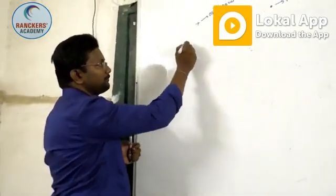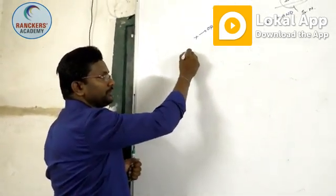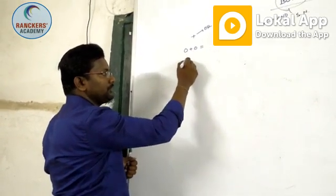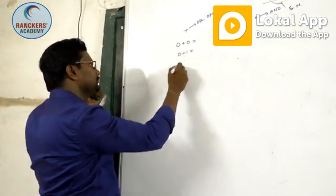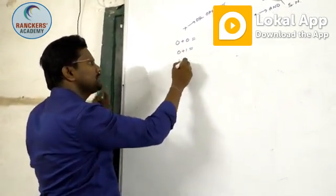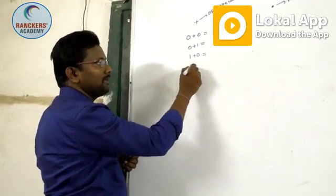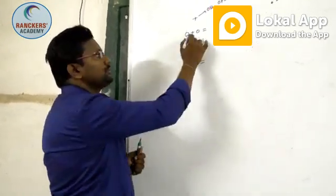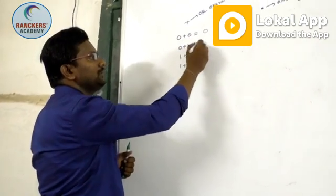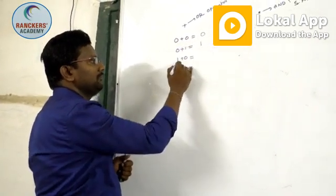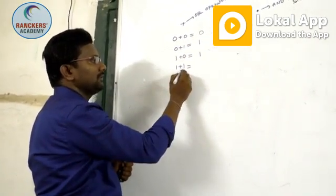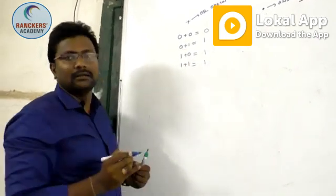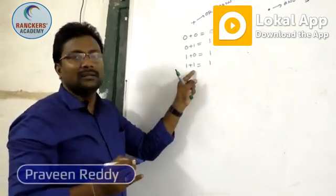We will keep two variables. Zero plus zero is zero, zero plus one is one, one plus zero is one, one plus one — since this is the OR operator, that's why it is also one.